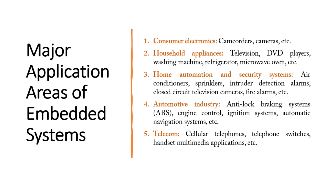You have CCTV — closed circuit television cameras — which are also embedded systems with a specific function: monitoring. There is no controlling, no complex processing; it is just monitoring. So monitoring is a very good purpose of an embedded system and CCTV serves that purpose. Then you have fire alarms, where a sensor system collects data, processes it, and gives you an alarm sound.